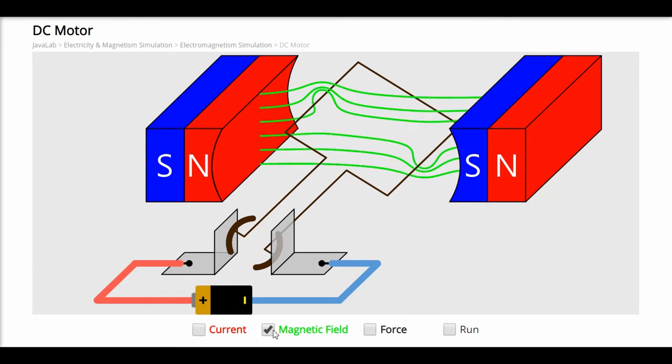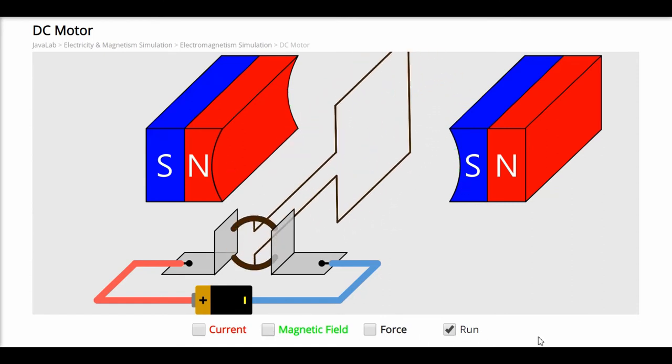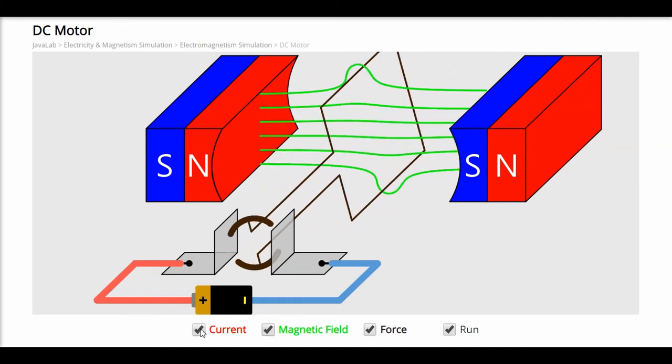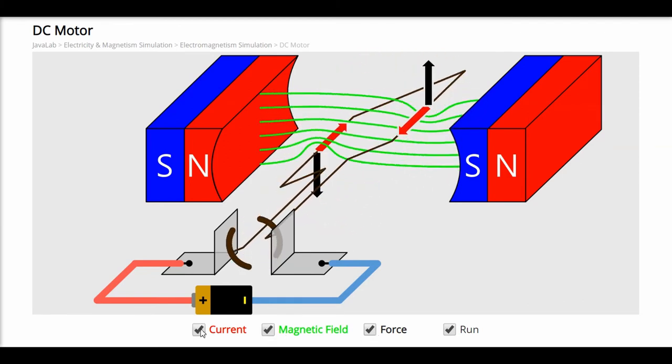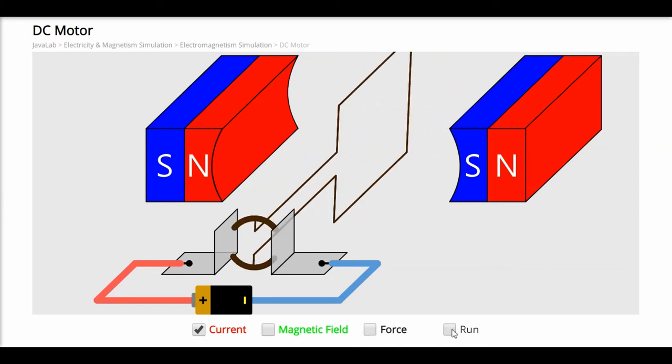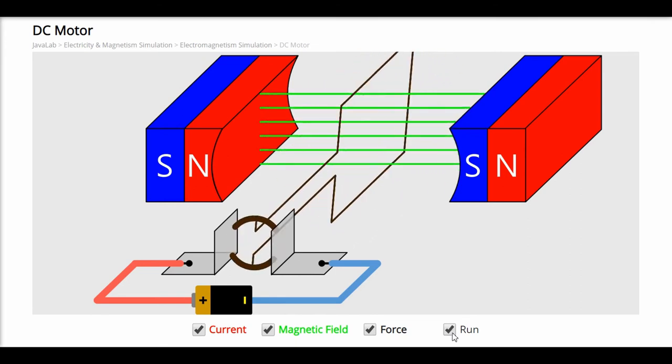Working of DC motor is explained here. You can stop the motor at any point to understand the role of commutator. Commutator maintains the same direction of current during rotation. DC motor works as per Fleming's left hand rule.